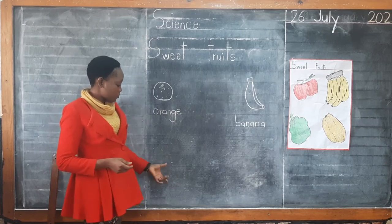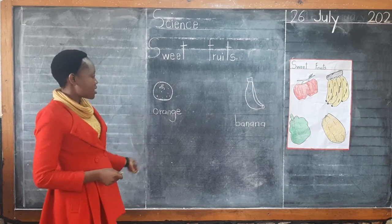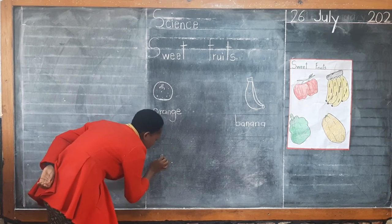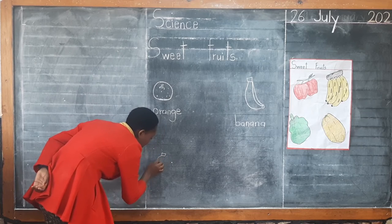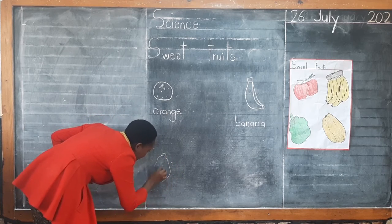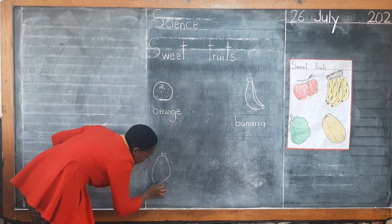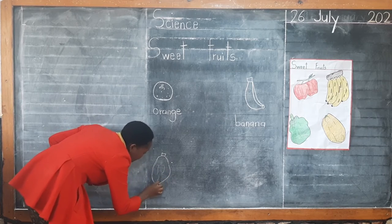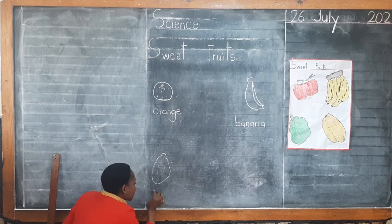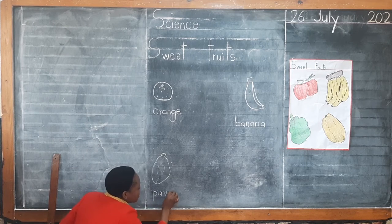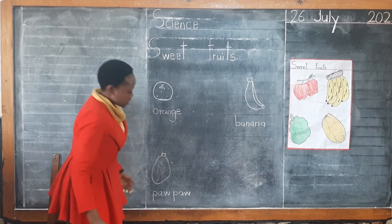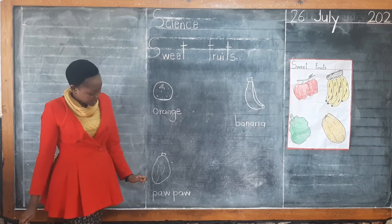What sweet fruit should we draw next? We are going to draw the popo. I am drawing it, copying from the chart. There is my popo — you draw it too. So now that we have drawn our sweet fruit, which is a popo, we are going to write 'popo' here. Because the popo is a sweet fruit. So we have written 'popo' here.